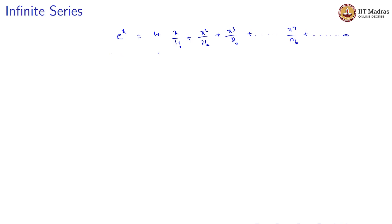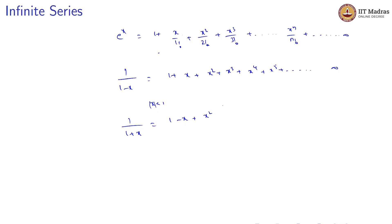Another infinite series is the expansion of 1/(1 − x), which equals 1 + x + x² + x³ + x⁴ + x⁵ + ... to infinity, where the modulus of x should be less than 1. And the expansion of 1/(1 + x) equals 1 − x + x² − x³ + x⁴ − x⁵ + ... to infinity, where again the modulus of x should be less than 1.